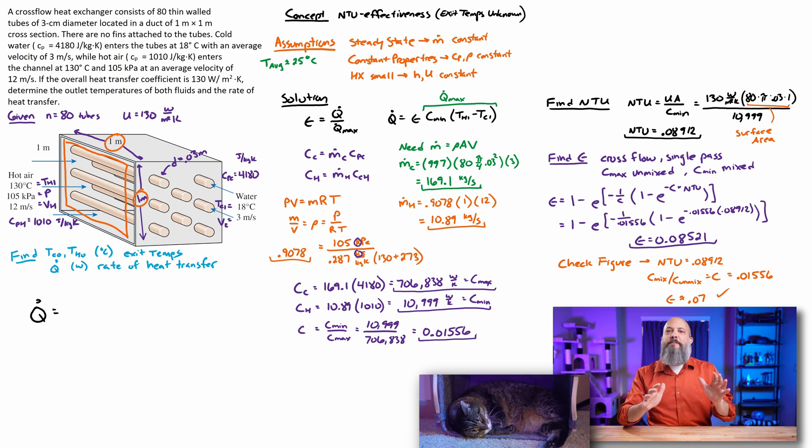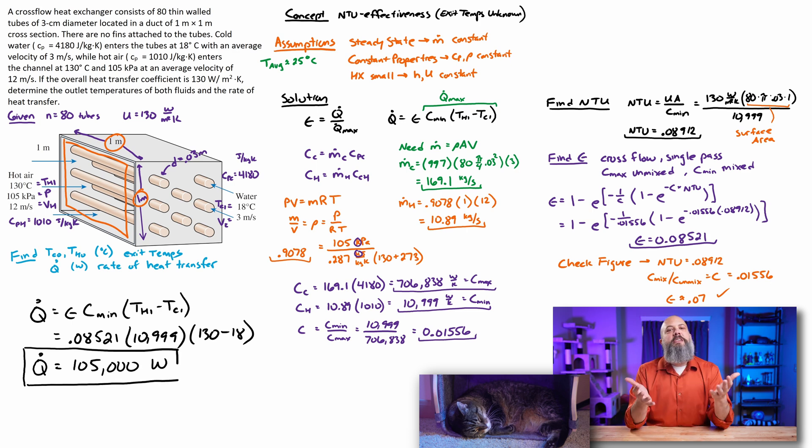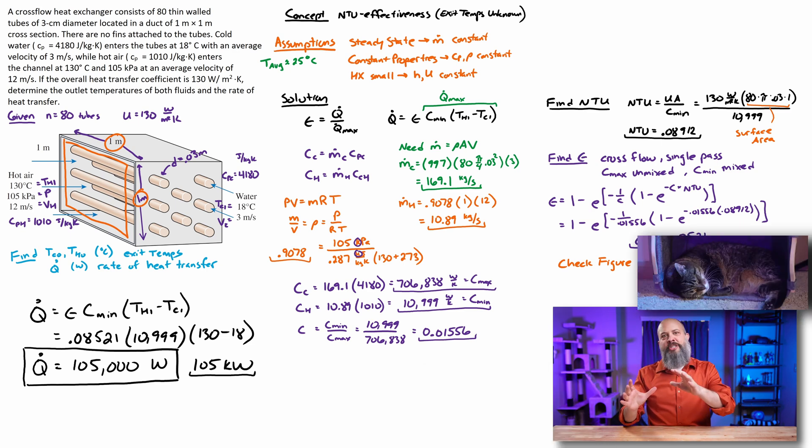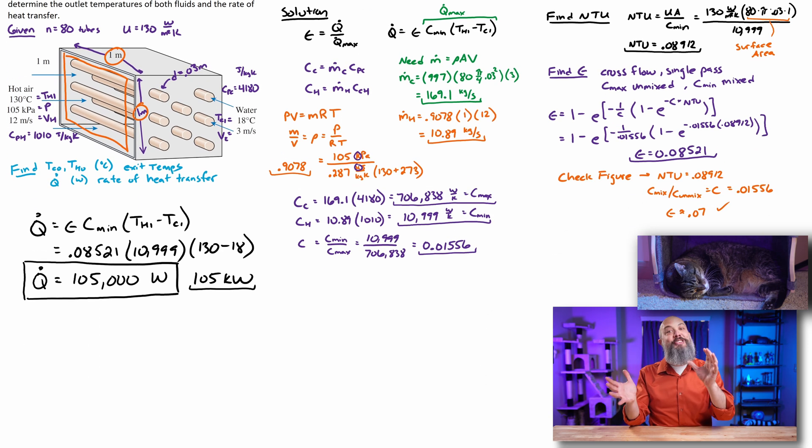So q dot is equal to effectiveness times q dot max. And we already found all these terms, the effectiveness 0.085, our minimum heat capacity rate 10999, and the maximum possible delta T, our T hot in minus T cold in. So we're going to get 105,000 watts or 105 kilowatts. And again, that maximum change in temperature, 130 minus 18, we're actually probably not getting anywhere close to that delta T because our effectiveness is so small, only 0.08.